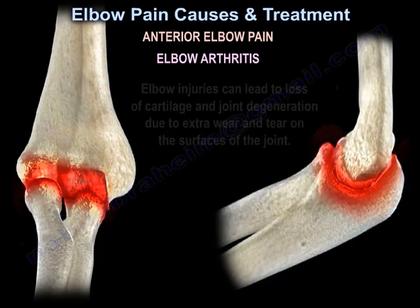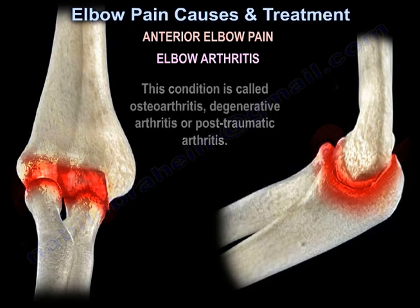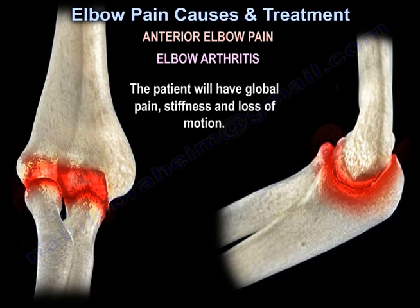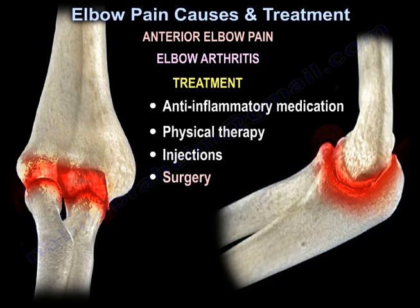Elbow arthritis: elbow injuries can lead to loss of cartilage and joint degeneration due to extra wear and tear on the surfaces of the joint. This condition is called osteoarthritis, degenerative arthritis, or post-traumatic arthritis. The patient has global pain, stiffness, and loss of motion. Treatment will include anti-inflammatory medication, physiotherapy, injections, and surgery.